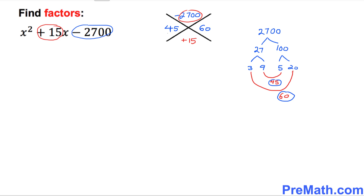Now we need to fix the signs. Since the middle term is positive 15, we make it positive 60 and negative 45. If you multiply these, you get negative 2700, and if you add them, you get positive 15.